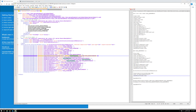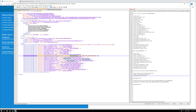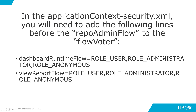Once you add those, save the file. Make sure you save these files. Then we're going to modify one more file. In the applicationcontext-security.xml file, you'll need to add the following lines before the repo admin flow to the flow voter.